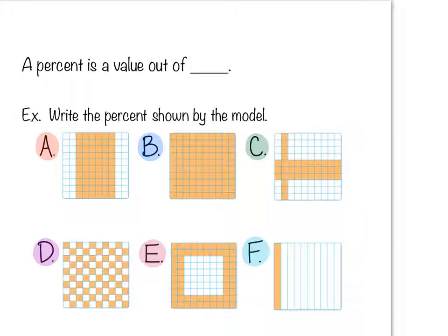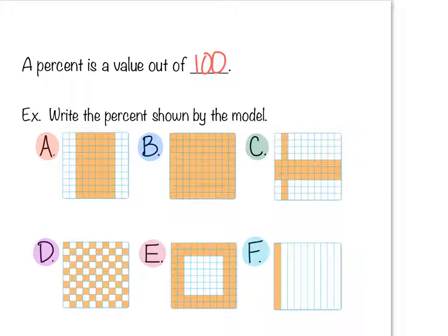This is section 6.1, percents and decimals. A percent is a value out of 100. That's what percent actually means — 'cent' like century means 100, and the word 'per' means out of. So percent literally means out of 100.